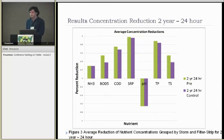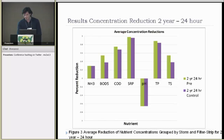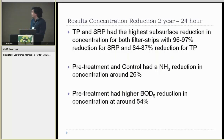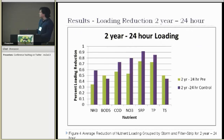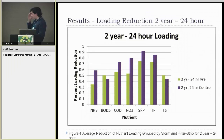Here are the concentration reductions for the 2-year 24-hour storm. The pre-treatment had a little bit better concentration reduction, but still similar to the 25-year. Again, TP and SRP were greatly reduced. Pre-treatment and control had similar ammonia reduction, around 26% — a little bit lower than the 25-year. The pre-treatment had a higher BOD-5 reduction for the 2-year 24-hour. For loading reduction, the pre-treatment had a little bit lower loading reduction because it had more surface runoff for this design storm, and therefore not as many nutrients were successfully trapped by the filter strip. This could have been due to the sequential design storms being applied, as the soil moisture in the pre-treatment filter strip was a little bit higher and therefore it couldn't infiltrate as much runoff.